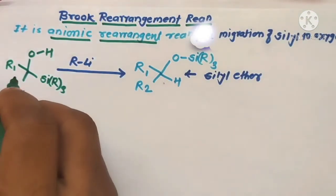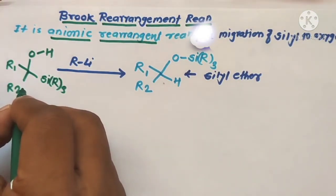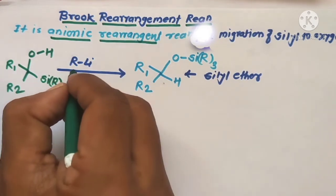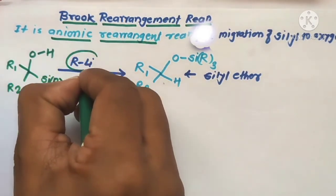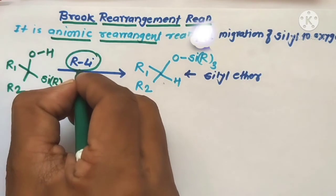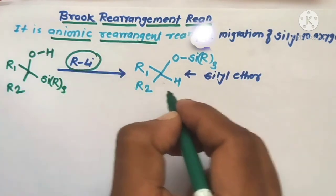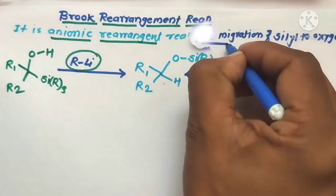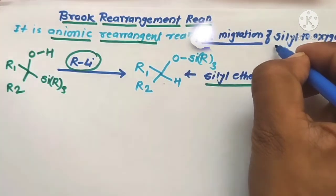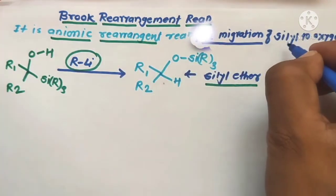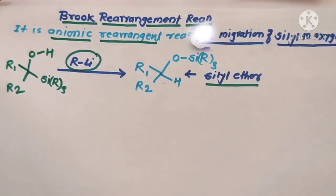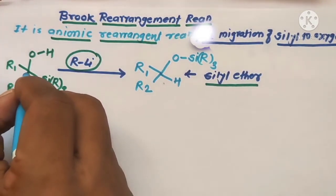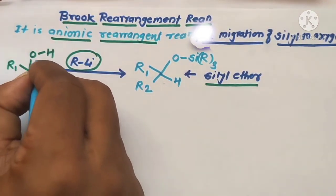In this reaction, hydroxy silyl alkyl molecules are reacted in the presence of a base to form silyl ether as the final product. The silyl group migrates from the carbon to the oxygen atom. In the substrate molecule, both the hydroxy group and the silyl group are present on the same carbon atom.